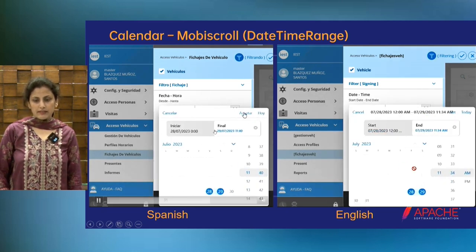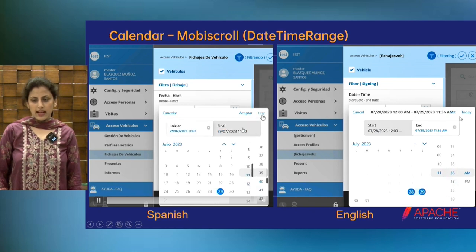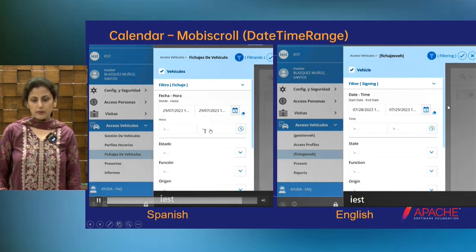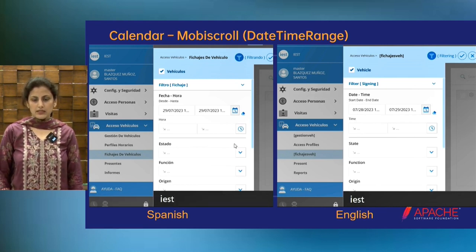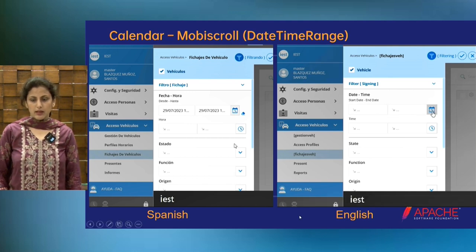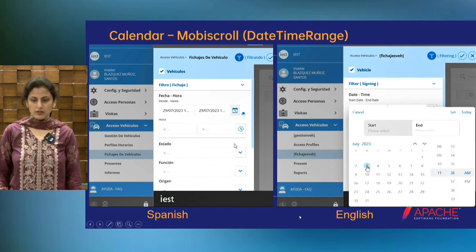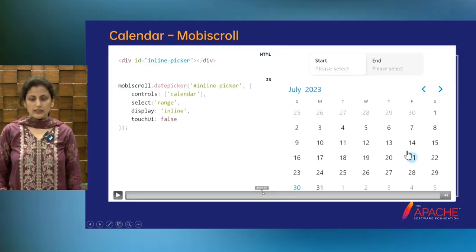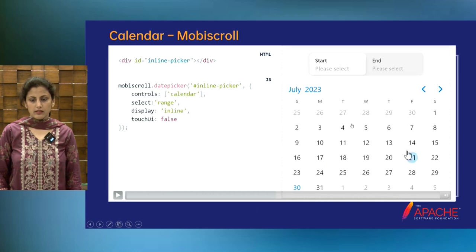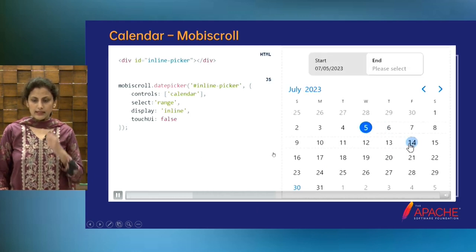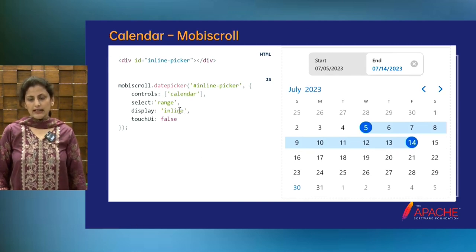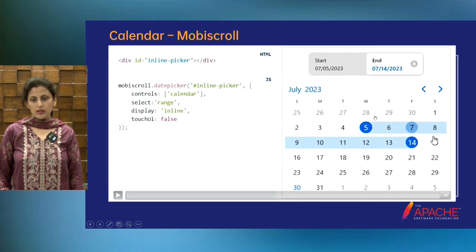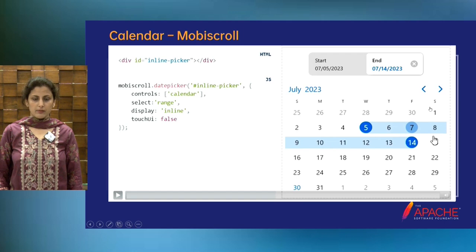These are the range controls — start date, final date. If you select the range and time for start date and end date, it would work automatically like any other available JavaScript control. But the wrapper class makes it easier to embed it in the existing Apache Royale application. This is again an example of another MobiScroll calendar — this calendar is selectable for different ranges and does not include time.